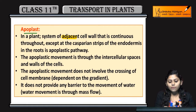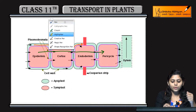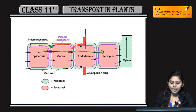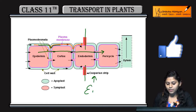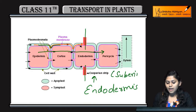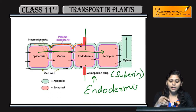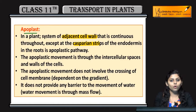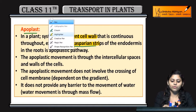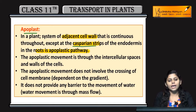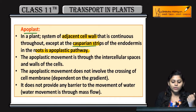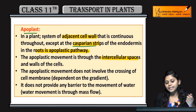Adjacent cell wall jo continuous hai throughout — except casparian strips — yahan movement ho rahi hai cell wall ke through. Yeh jo casparian strips hain, kahan hain? Yeh endodermis mein hain. Endodermis mein casparian strips hain jo suberin ki bani hain. Yahan se apoplast pathway nahi hoti — water ya mineral ko yahan se cell ke andar enter karna padta hai aur symplast pathway follow karni padti hai. Casparian strip mein apoplast pathway nahi hoti.